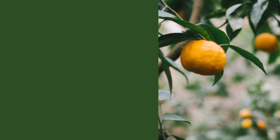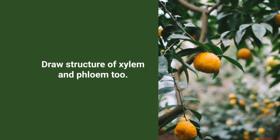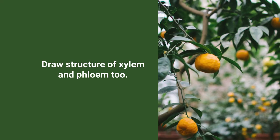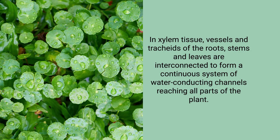Students have already studied xylem and phloem in Class 9 — they know their pictures, diagrams, and functions. You can now ask them to draw the structure of xylem and phloem. Xylem has tissues, vessels, and tracheids in roots, stems, and leaves that are interconnected to form a continuous system of water-conducting channels reaching every part of the plant.